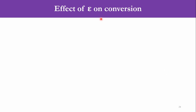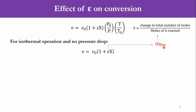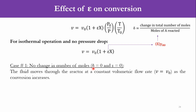Now we discuss the rule of thumb — the effect of epsilon on conversion. V = V₀(1+εX): for an isothermal system T/T₀ cancels, and for no pressure drop P₀/P cancels. Recall that ε = δ·yA0, where yA0 is the mole fraction of the limiting reactant in the feed and δ is the change in total moles divided by moles of the limiting reactant. Case 1: δ = 0, ε = 0 — the number of moles of reactants equals products, so the fluid moves through the reactor at constant volumetric flow rate as conversion increases.